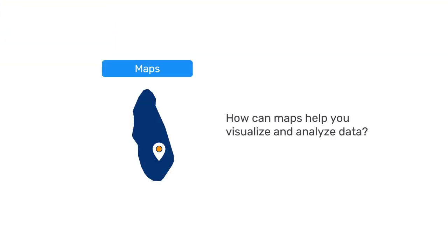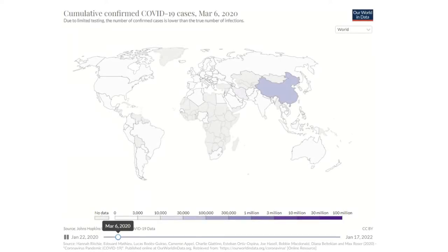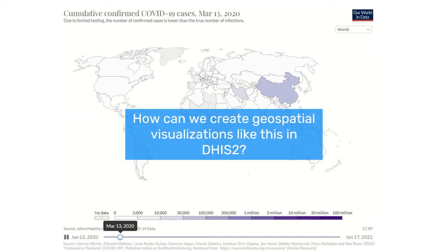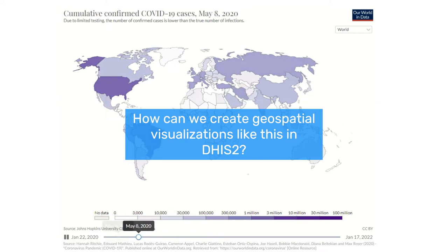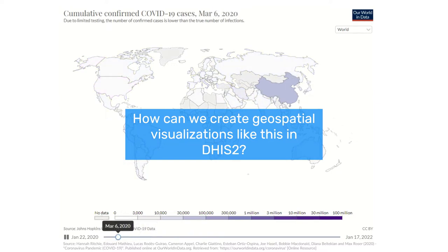How can maps help you visualize and analyze data? Map visualizations are a highly efficient, eye-catching tool for geospatially analyzing data. For example, you may have seen maps like these to follow up on the COVID-19 pandemic, where the colors indicate the number of confirmed cases by country.